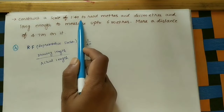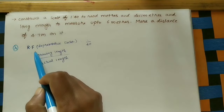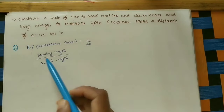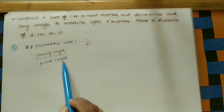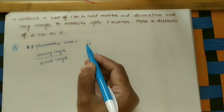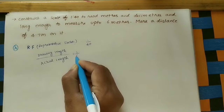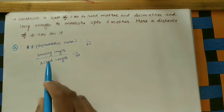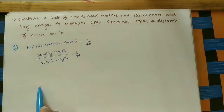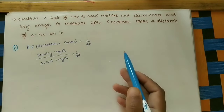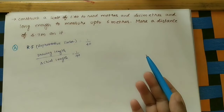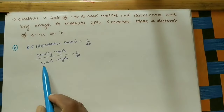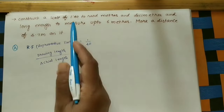First write the given data. Scale of 1 is to 40 means this is the RF value. RF means Representative Factor. It is equal to 1 by 40. RF is the ratio of drawing length to actual length. Drawing length is what we draw on the sheet; actual length is the real-world measurement in meters or decimeters.